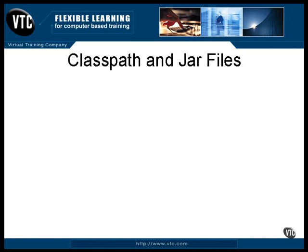If you look in the lib directory of your Java distribution, you'll find JAR files. That's where the system class files are located. The program used to manage JAR files is named JAR. A JAR file is the same as a ZIP file. In fact, you can use the ZIP utility to extract the files from a JAR file. You need to use the JAR utility to build a JAR file, however, because the file contains a manifest file — a list of all the files contained in the JAR file. There is quite a bit more about JAR files, and they can be very handy, but none of this is on the certification exam. So I'll see you next time.